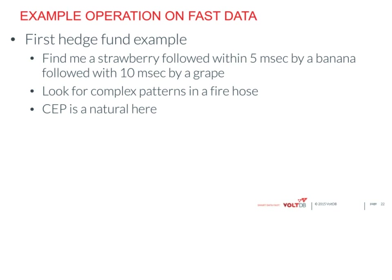Here's an example from a typical hedge fund doing electronic trading: they're looking for patterns in a trading stream — find a strawberry followed within five milliseconds by a banana, followed within 10 milliseconds by a grape — meaning find a situation where IBM went up by a certain amount and Oracle went down. You're looking for a complex pattern in a firehose, and CEP systems are a natural for this style of application.